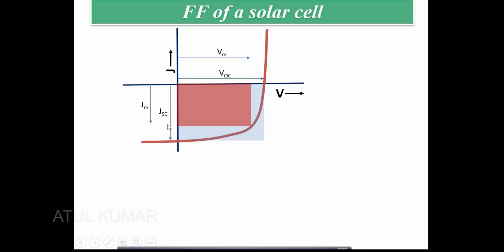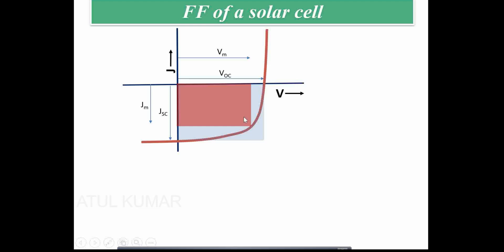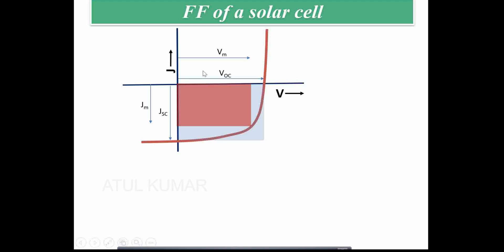VOC times JSC is not the power actually produced by our cell — it is the power produced only if the cell is ideal. What our solar cell is actually producing is the area under the JV curve. VM times JM — the red rectangle — is the power delivered to the load. The ratio of these two — power in ideal condition to power delivered to the load — is given by the fill factor.